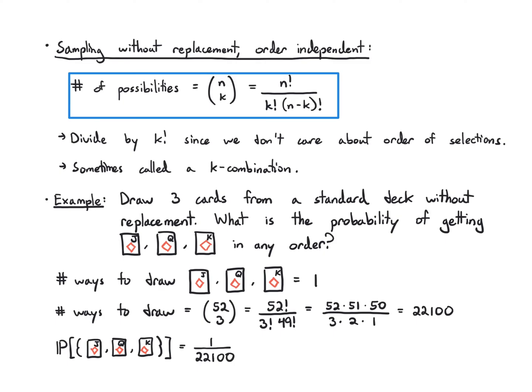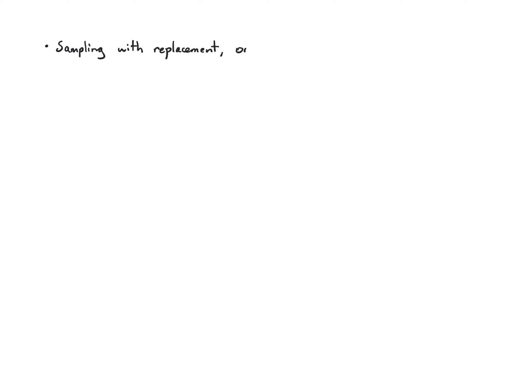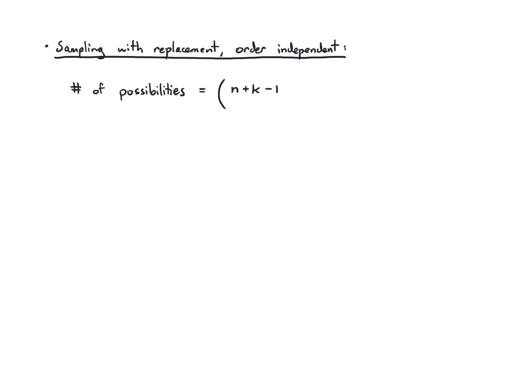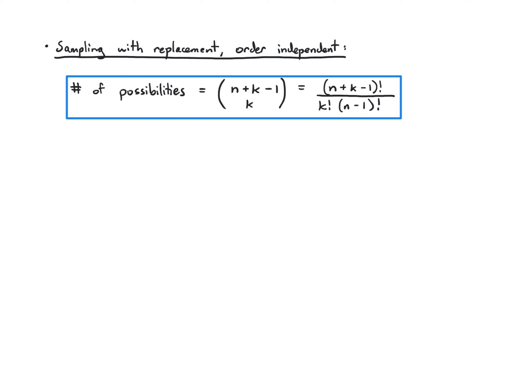The last sampling formula is sampling with replacement and order independent. The number of possibilities here is (n + k − 1) choose k, which equals (n + k − 1) factorial over (k factorial times (n−1) factorial). The previous three formulas are fairly easy to derive if you spend a few minutes with them, but this one takes a bit more work — you can find the derivation in any textbook.